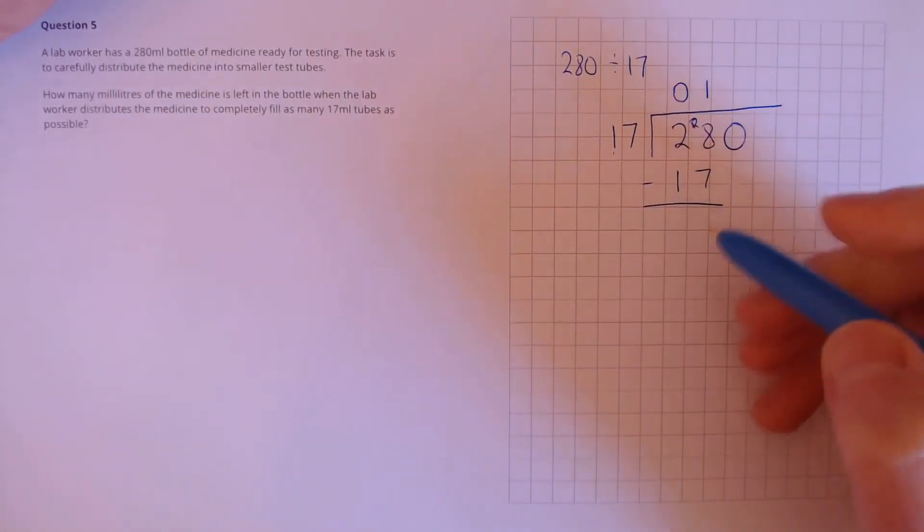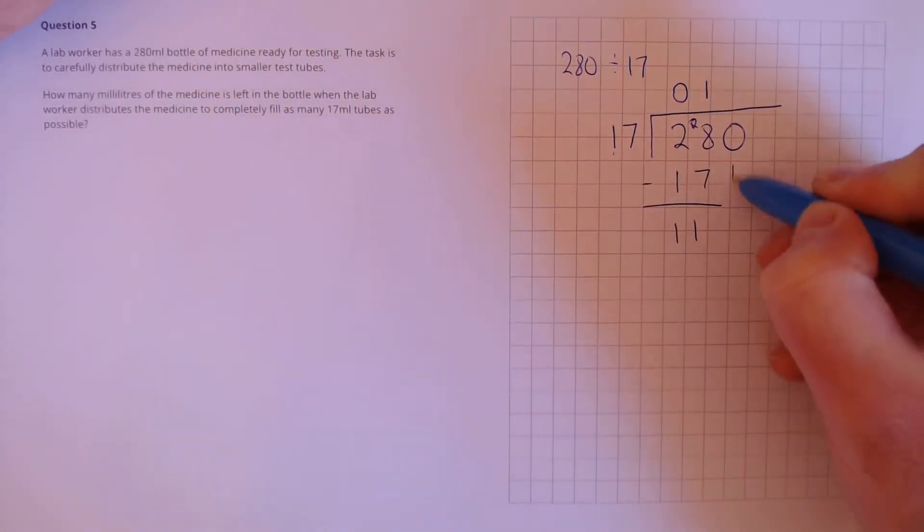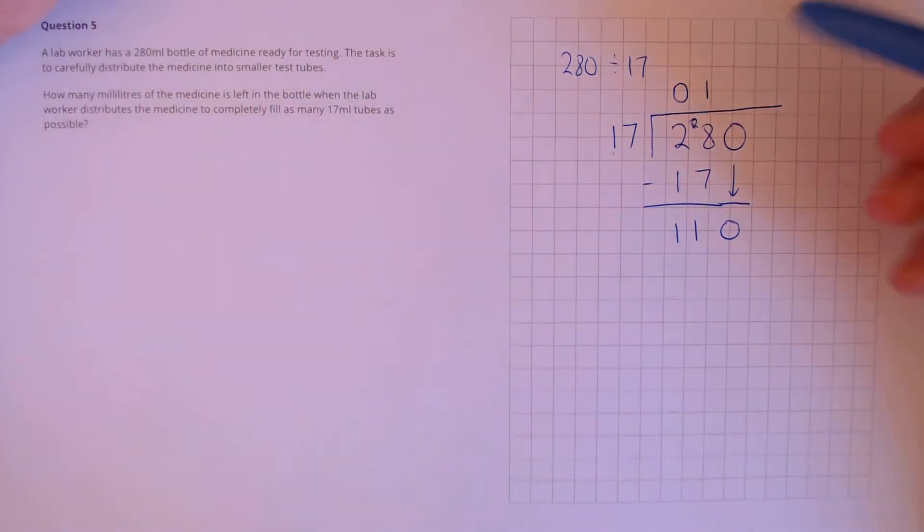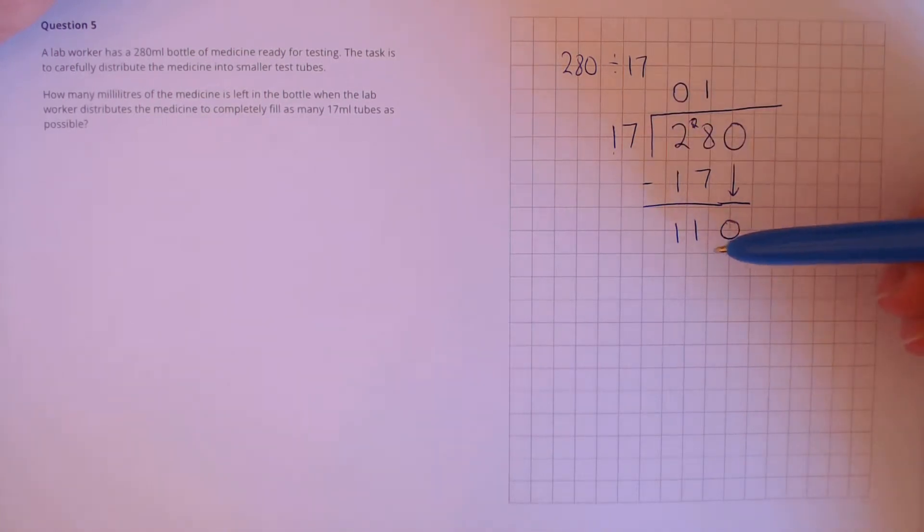28 minus 17 that's 11 and bring down the next digit to 110. Next we need to see does 17 go into 110? It does but we don't know the multiple.